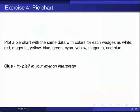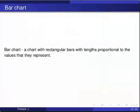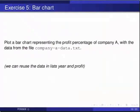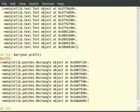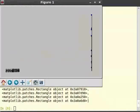Now let us move on to bar charts. A bar chart or bar graph is a chart with rectangular bars with lengths proportional to the values that they represent. Plot a bar chart representing the profit percentage of company A with the data from 'company-a-data.txt'. We can reuse the previously loaded data and plot using the function bar(). So type bar(year, profit). Note that bar() needs at least two arguments — the values on the x-coordinate and the values on the y-coordinate, which determine the height of the bars.